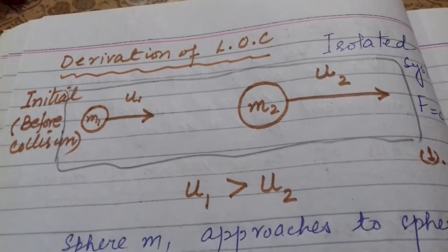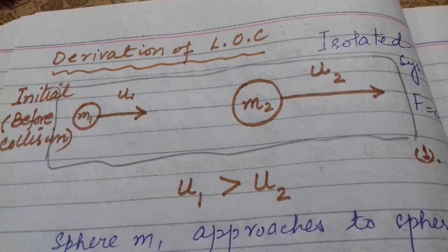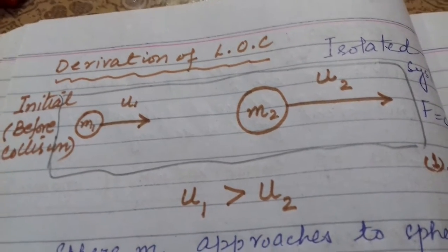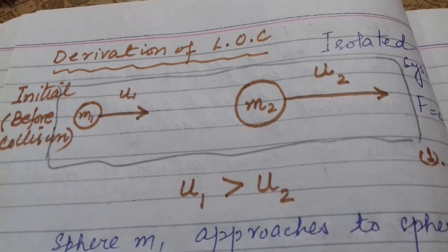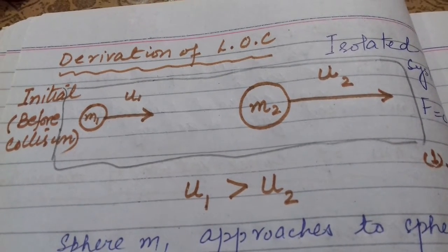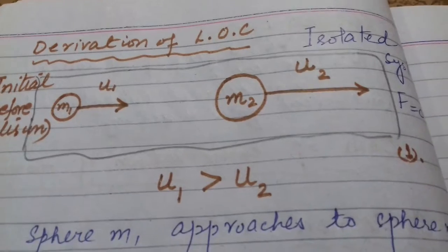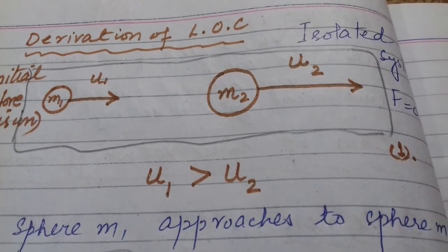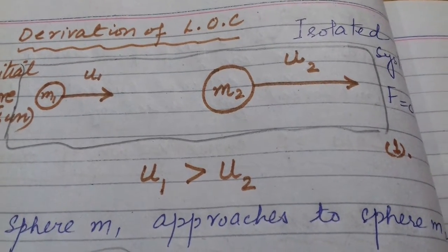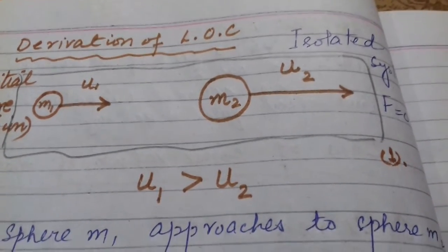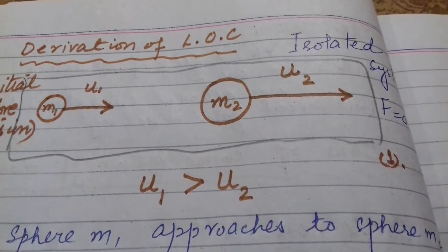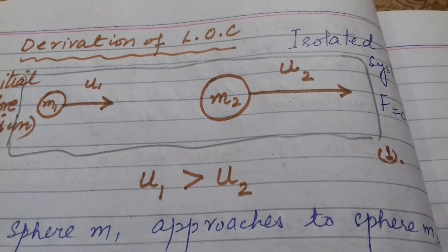In that case study, we have two spheres of mass M1 and M2. M1 is initially moving with speed or velocity U1 in the straight line. M2 is also moving with some velocity U2 in the same direction, in the same straight line. But condition imposed is that velocity of sphere M1 is greater than M2.